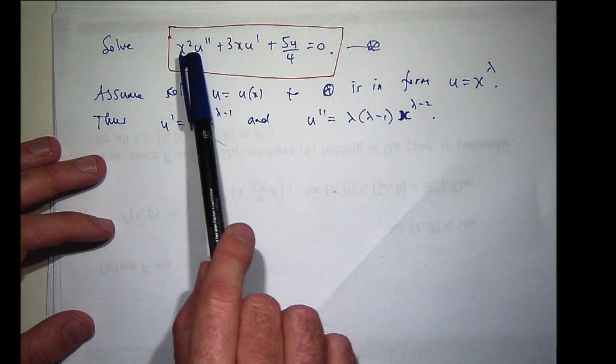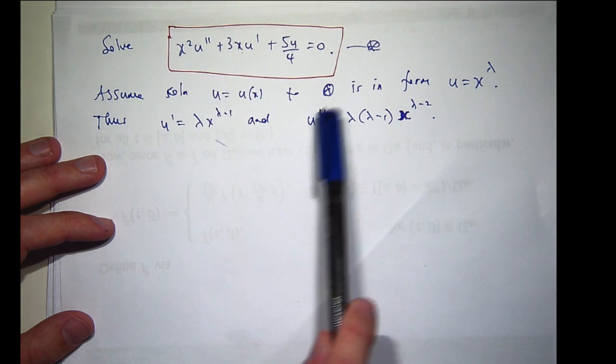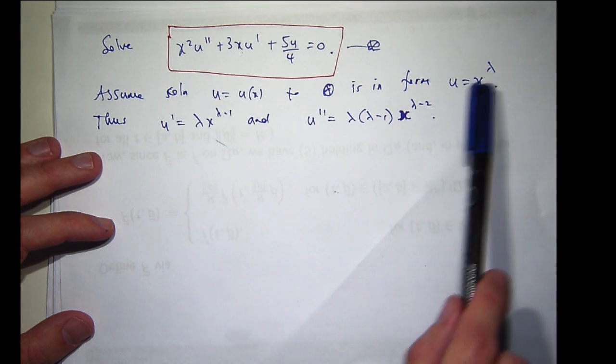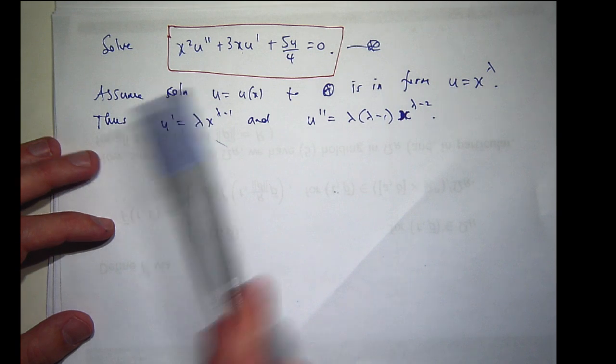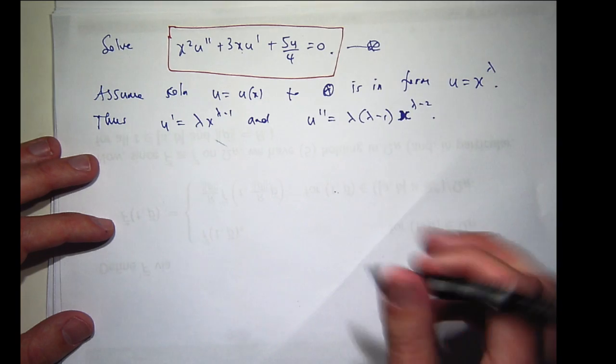Now you can see that because of the structure of these coefficient functions, when you substitute these power functions in, you're actually going to get a common factor of x^λ on the left-hand side.